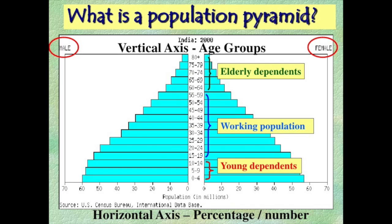Finally, males are on the left and females are on the right. This is easy to remember because, as a lot of us guys have learned, females are always right. Gentlemen, just kind of go with that. So again, here's our population pyramid — you can see that the wider the base, the more children you have; the narrower the top, the fewer older people you have.